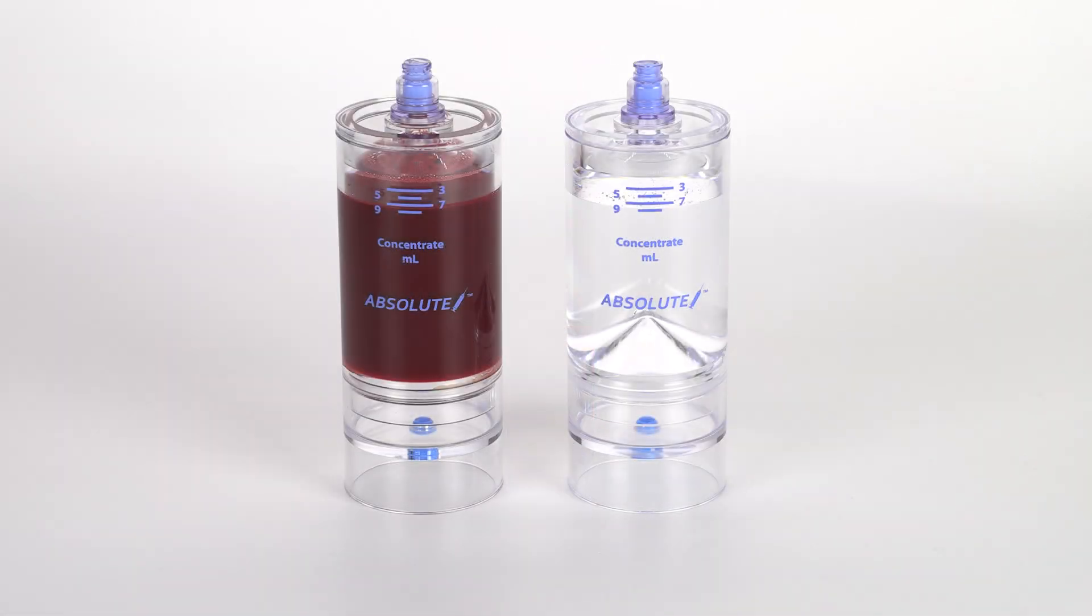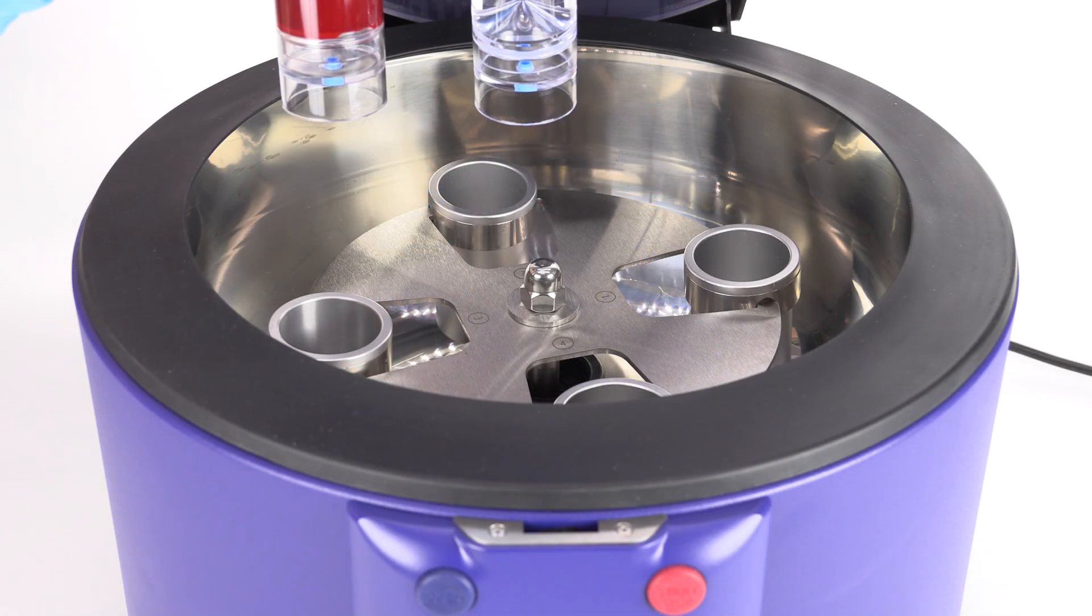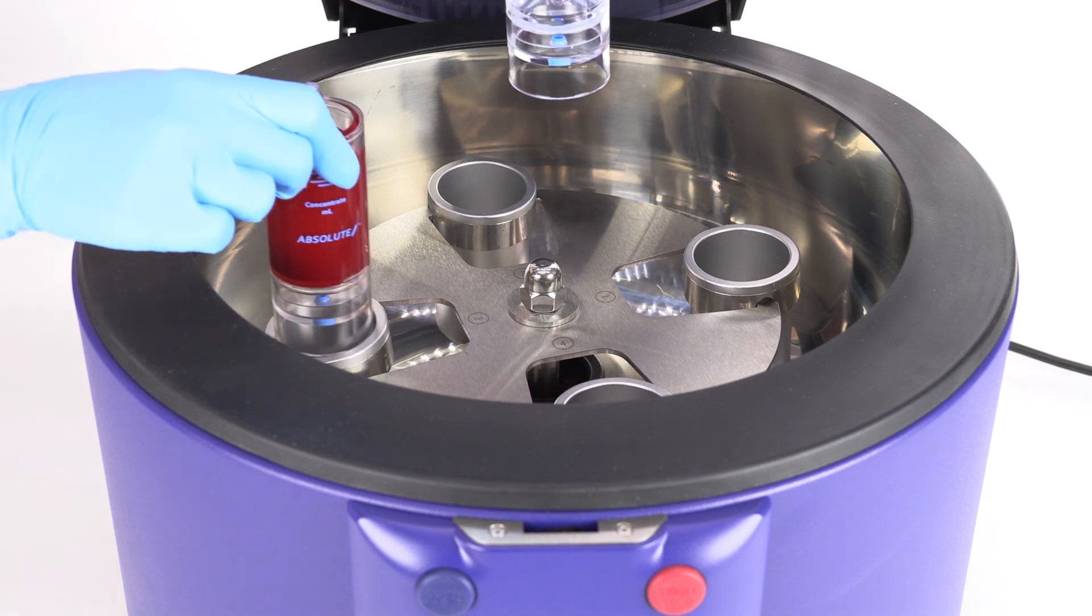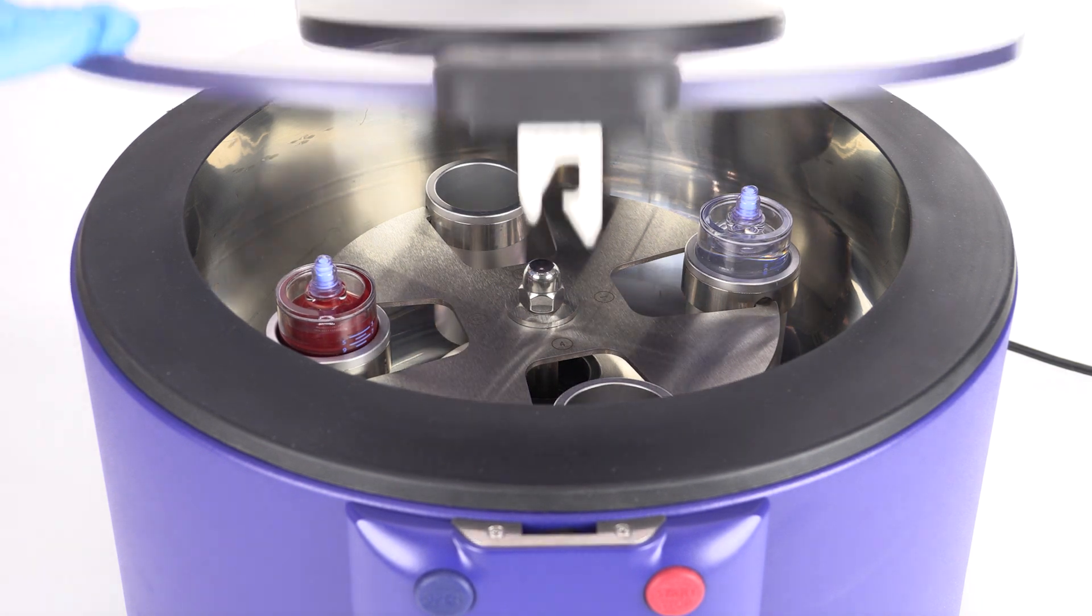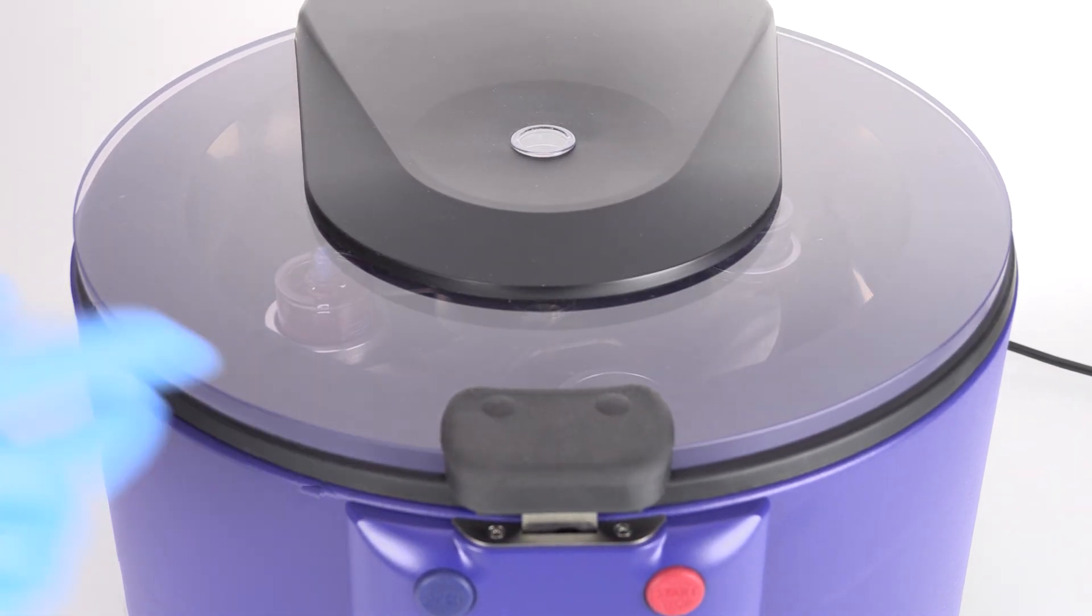Use the counterbalance device to counterbalance with equal volume. Place both devices in the centrifuge rotor at opposite ends. Follow the protocol settings provided in the Absolute PRP insert. Close the centrifuge lid and press start.